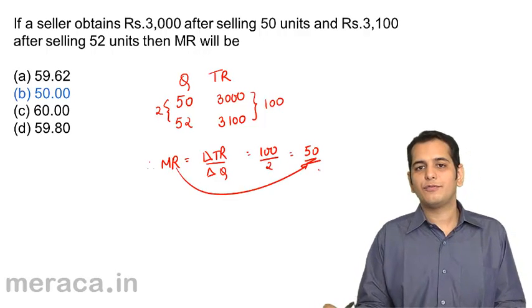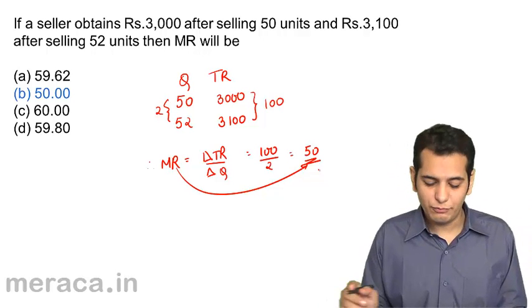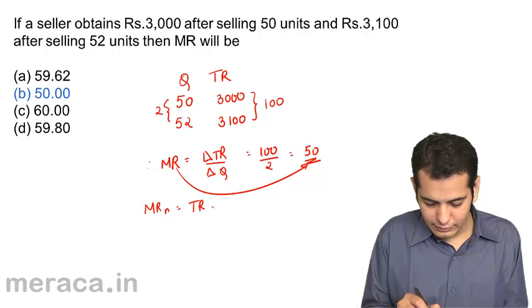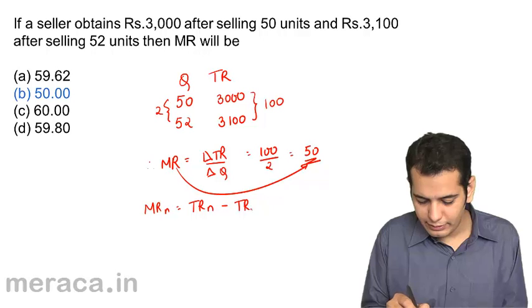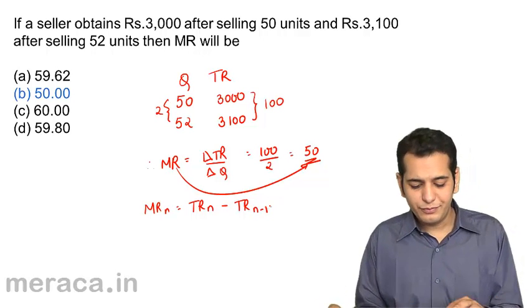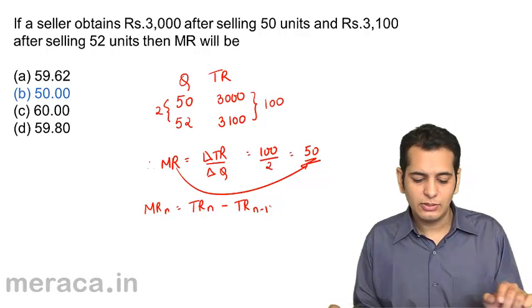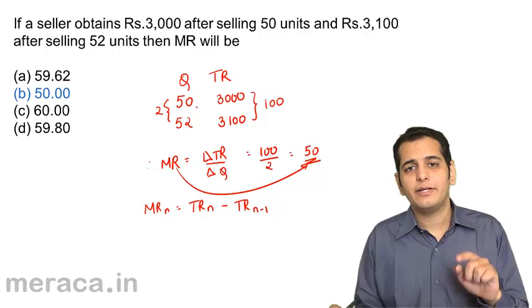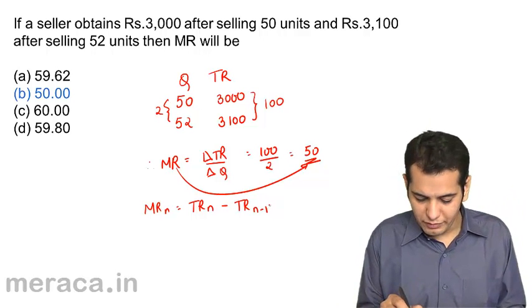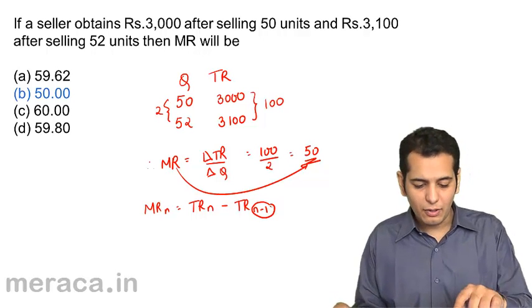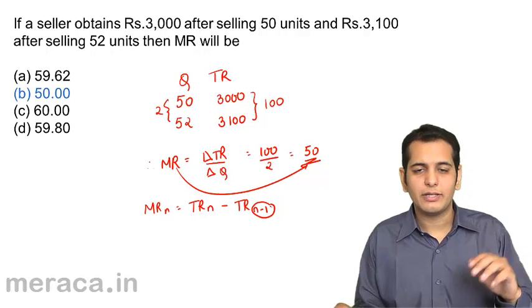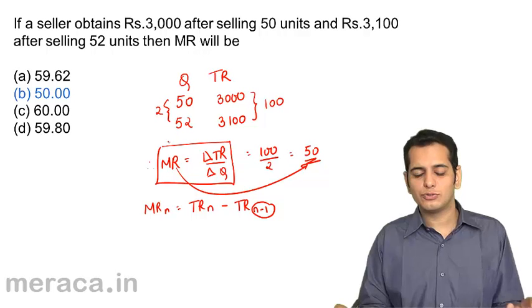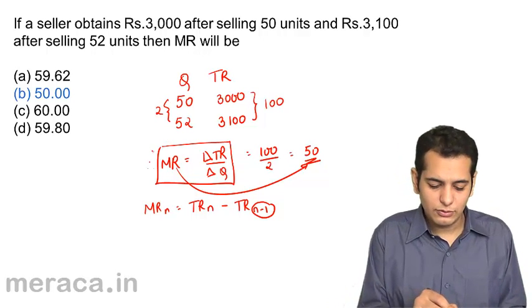So our MR would be 50. Now we also know there is another formula for MR. That is, MR at nth unit is TR at nth unit minus TR at n minus 1 unit. But we should not use this formula for calculating marginal revenue here, because the difference between the units is 2. This formula holds good when the difference between the units is only 1, because we want n minus 1 units here. But we are not given the TR at 51st unit, so we cannot find the MR in this case. So this is the formula that will always hold good. What I recommend is always use this formula.